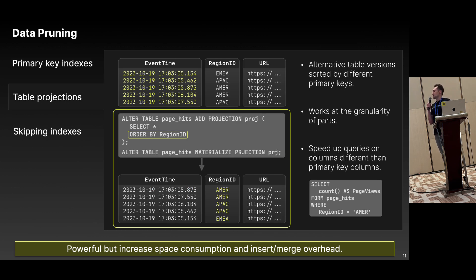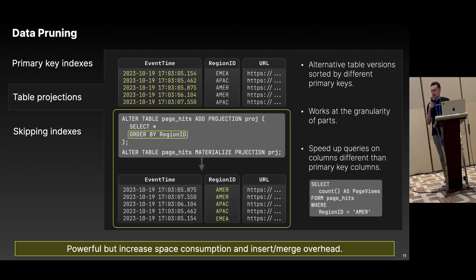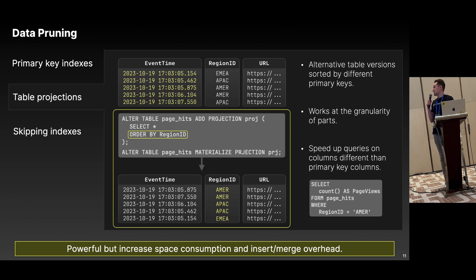The next technique for data pruning is table projections. Projections are alternative representations of data on disk — they can be sorted by a different primary key or be pre-aggregated. Projections work at data part granularity, so they can be created for certain data parts and not others. The query will be automatically optimized by choosing the most suitable projection. It's a really powerful tool, but the downside is that projections can duplicate your data, increasing storage.